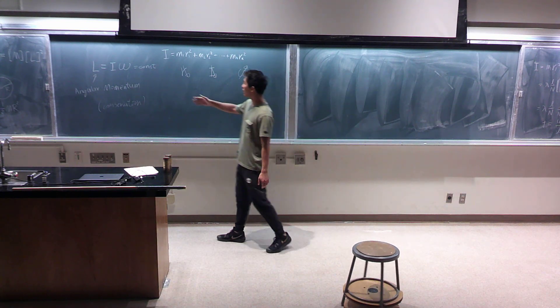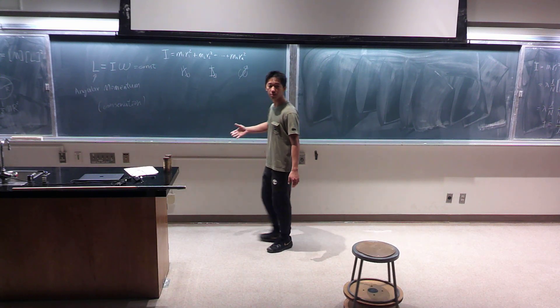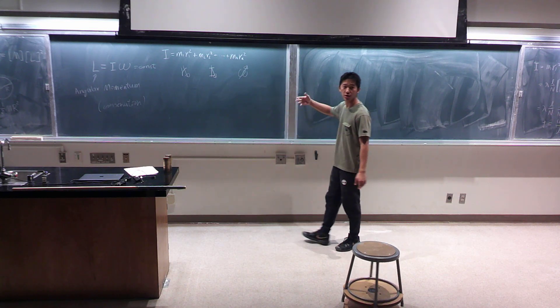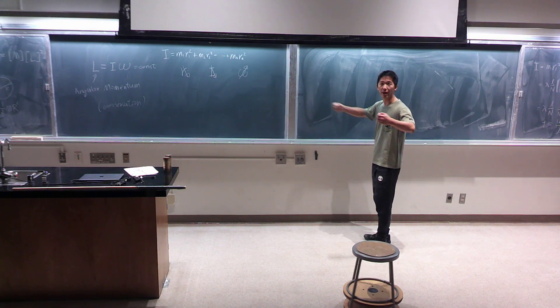What you just saw is that if you initially have angular momentum, then you can change your rotational speed by changing your mass distribution.